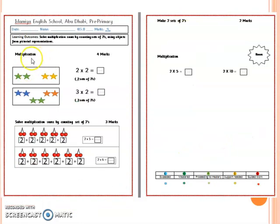Here is the multiplication worksheet. In question number one, you will make the set of twos and then count all together to get your answer. In question number two, you will solve multiplication sums by counting set of twos.